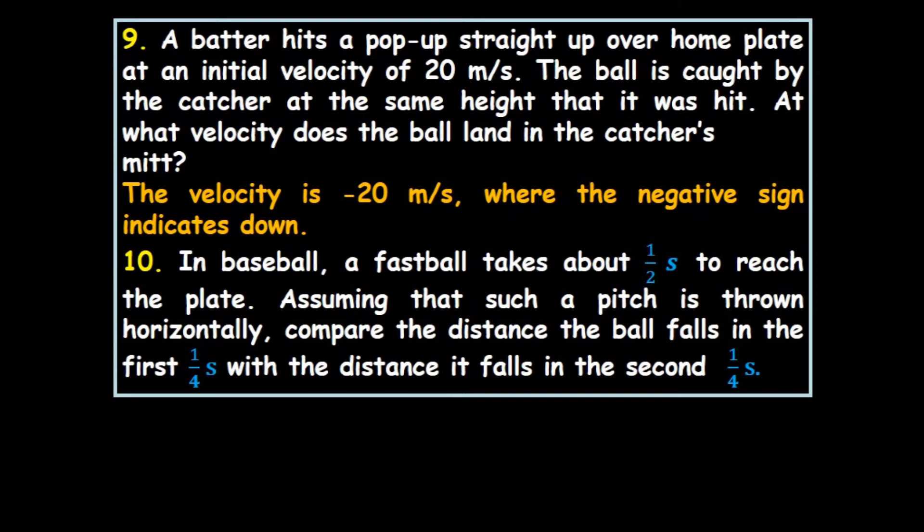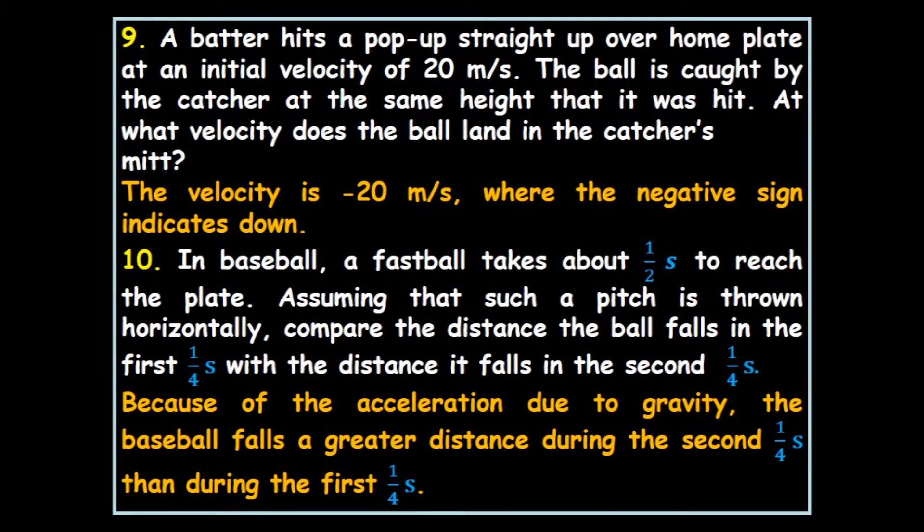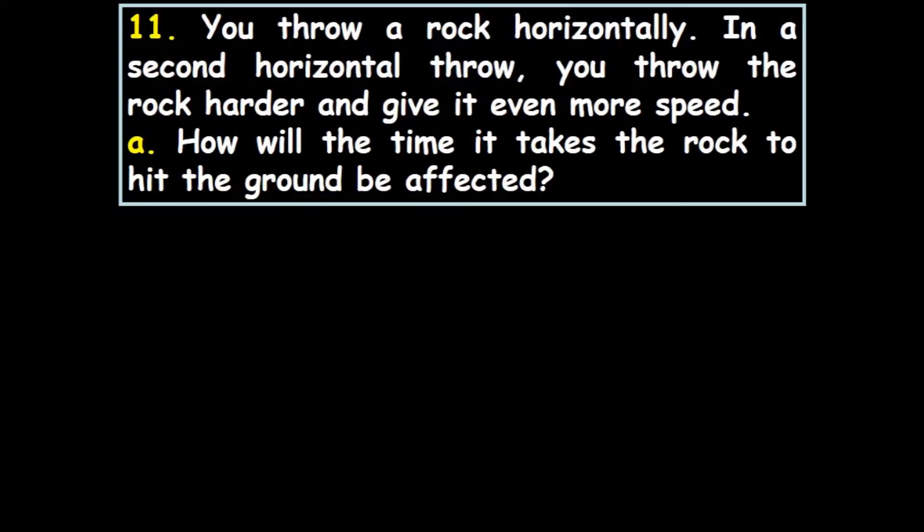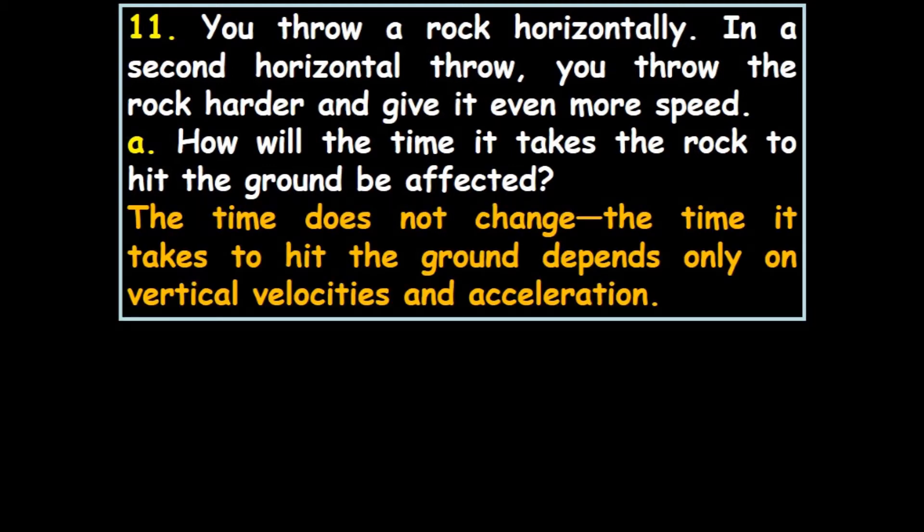You throw a rock horizontally. In a second horizontal throw, you throw the rock harder and give it more speed. How will the time it takes the rock to hit the ground be affected? The time does not change. The time it takes to hit the ground depends only on the vertical velocities and the acceleration.